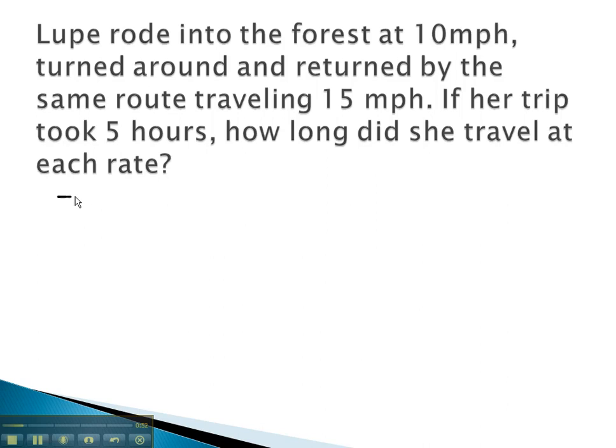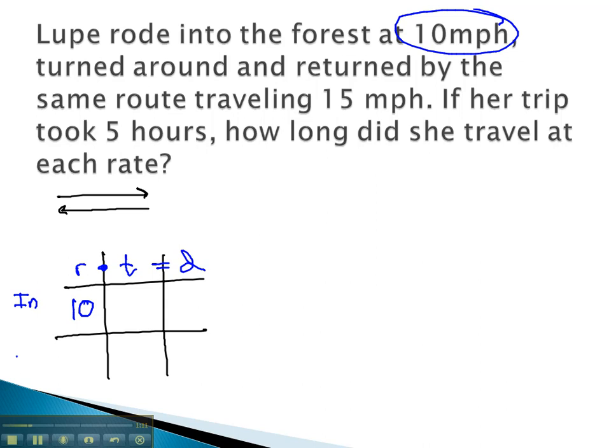In this example, we see Lupe run into the forest, and then return home by the same route. Organizing our information in a table, we see that rate times time equals distance. Going into the forest, her rate was 10 miles per hour. Coming out of the forest, her rate was 15 miles per hour, and we know the total time is 5 hours.